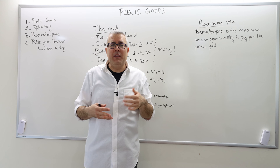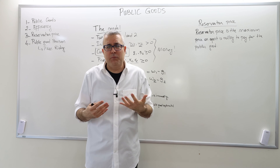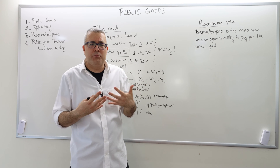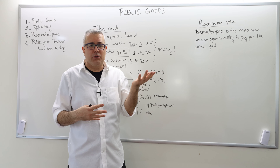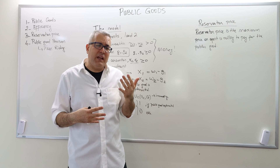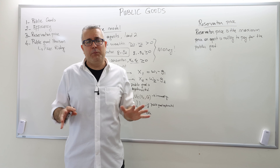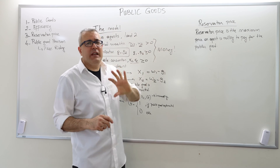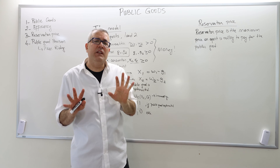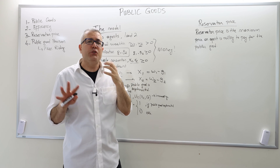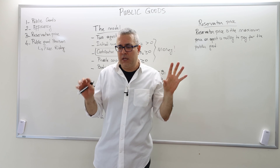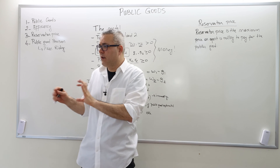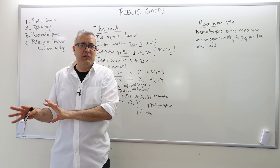What does that mean? It's like having or not having the public good. If the contribution that the agent should make is higher than his or her reservation price, then he actually prefers not to have the public good at all. So when it comes to calculating reservation price, we basically need to compare agents' utility functions under two scenarios: in scenario one, the agent doesn't have the public good, and in scenario two, the agent does have the public good.